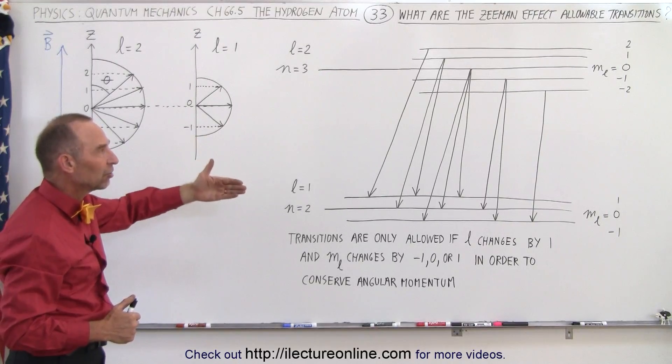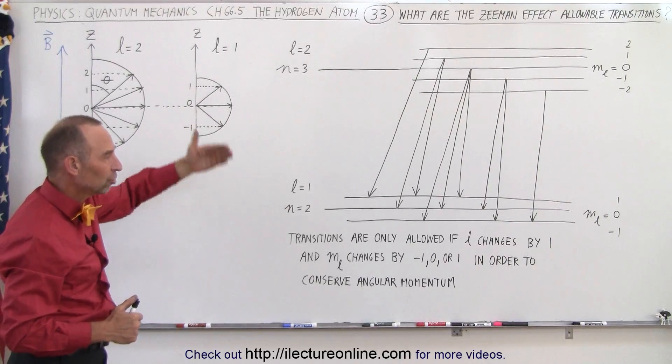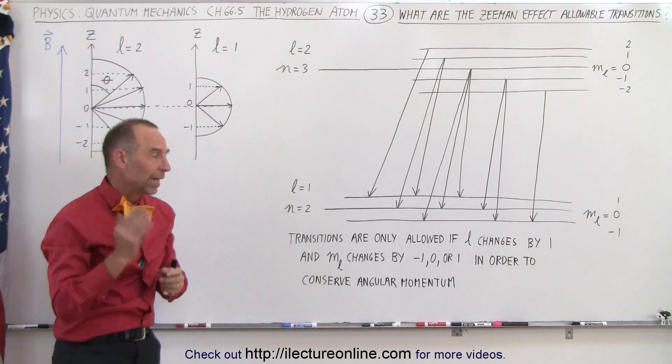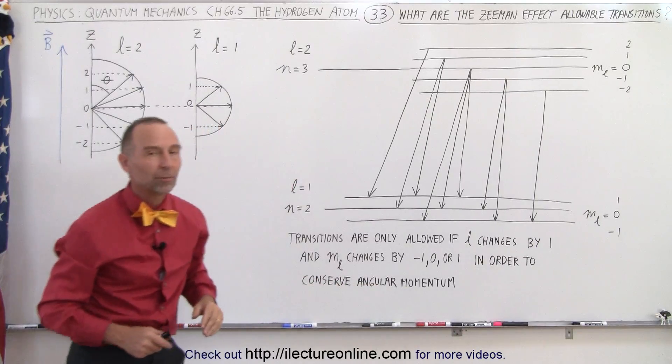But at least now you can see that there's also a limitation on the energy jumps, and from what position to what position the electron can jump from,